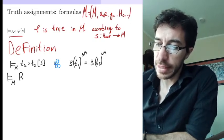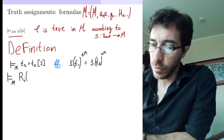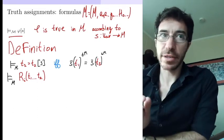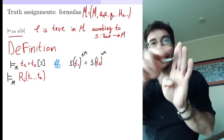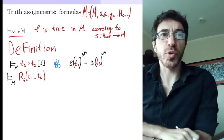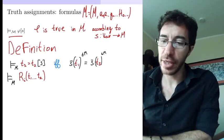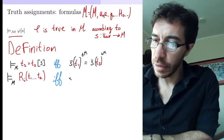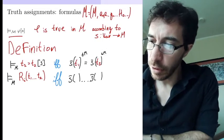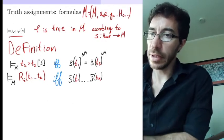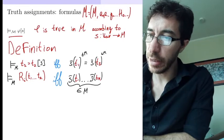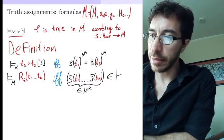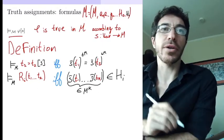If you've got a relation — say the i-th relation Ri — applied to terms t1 through tk. I'm coloring red everything that is a symbol. The s here is not a symbol, it's a variable assignment, and that funny double-line symbol just means it's true in this model. M is not a symbol either. This is going to be true if and only if the tuple (s̄(t1), ..., s̄(tk)), which is a k-tuple belonging to M^k, belongs to the interpretation of the relation Ri, namely H_i — the one that corresponds to R_i.